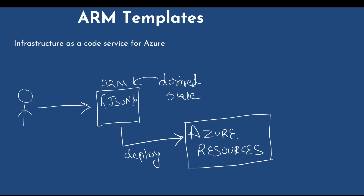The ARM template is the service we use to provision infrastructure as code for Azure. As a user, you create an ARM template, which is a JSON-based code template that defines the desired state of your infrastructure. For example, if you want to provision 50 virtual machines into Azure, you write an ARM template, provide all the details, and deploy it. Once deployed, you will get all 50 identical virtual machines created in your Azure subscription.